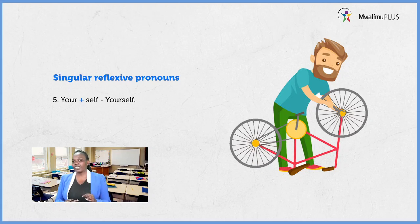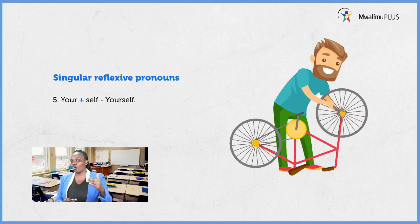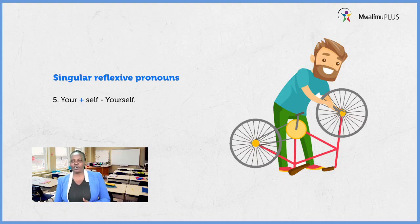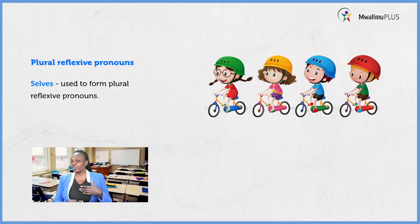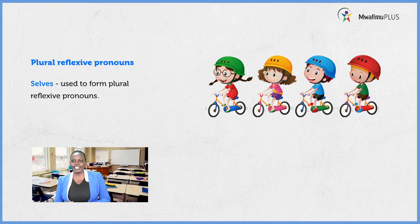If you are talking to two people, telling them they will repair the bicycle, you add your to selves and get yourselves. So for the word your, it can be singular or plural depending on how many people you are talking to — yourself for one, yourselves for more than one. Now, for plural reflexive pronouns, we use the word selves. We take the given pronoun, then we add the word selves, and we get our plural reflexive pronoun.